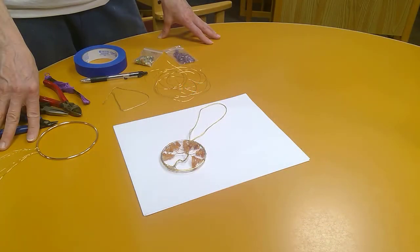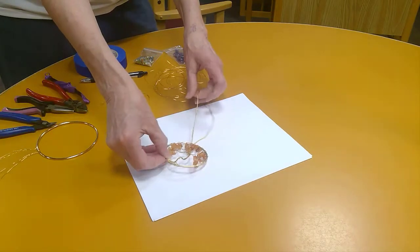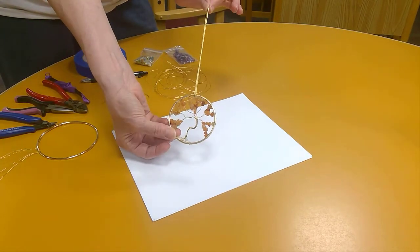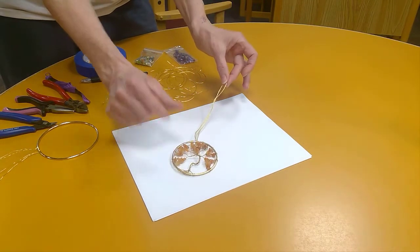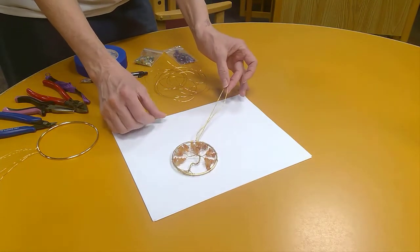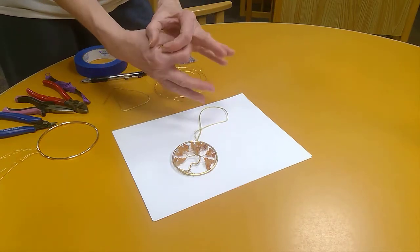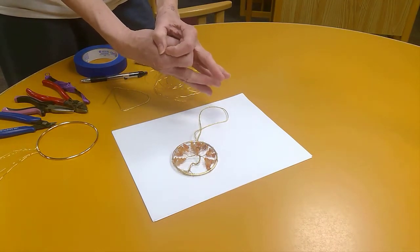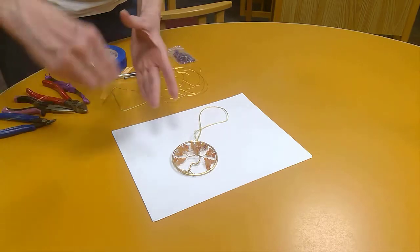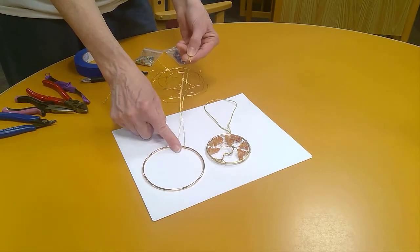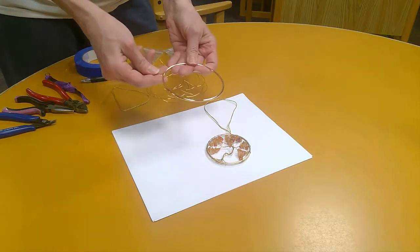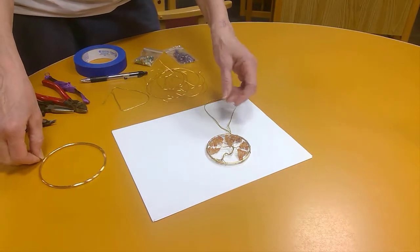Alright everybody, it's craft time once again. In today's tutorial we're going to show you how to make one of these cool tree of life hangings. The skill, once you learn it, is adaptable to smaller circles, necklaces and things like that, or even larger embroidery hoops. It's a pretty versatile technique.